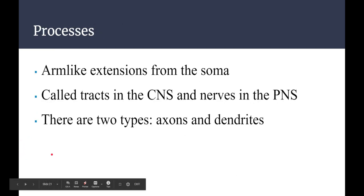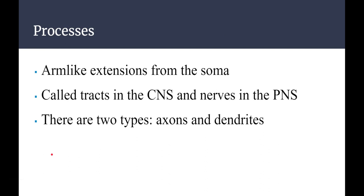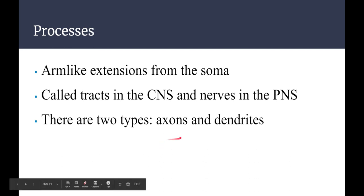There are a few processes that extend from the soma — arm-like extensions that come out from the cell body. In the CNS they're called tracts and in the PNS they're called nerves. You have two main types of processes: axons and dendrites.